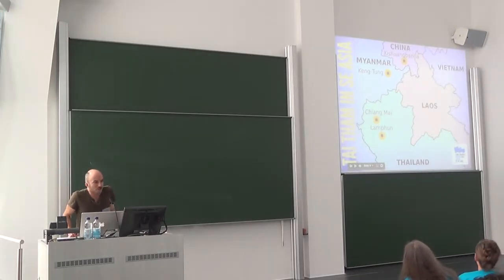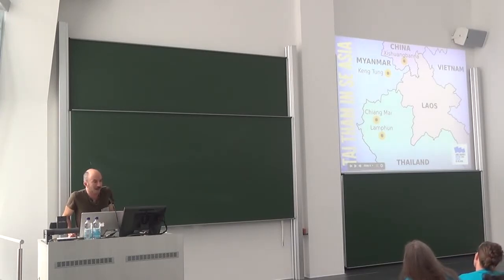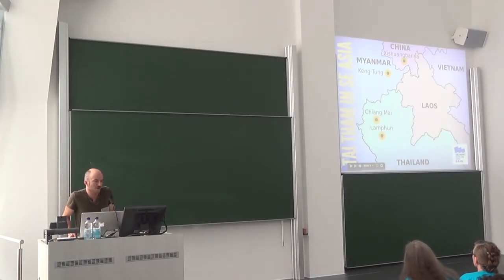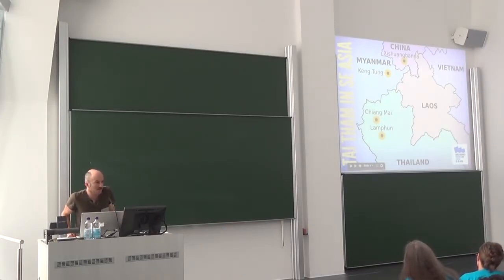For centuries throughout the northern regions of Southeast Asia — in the Xishuangbanna region of Yunnan in China, in the Shan state of Myanmar around the city of Kengtung, in parts of Laos, and in the Lanna region of Northern Thailand around the cities of Chiang Mai and Lamphun — the Taitam script has been used extensively to preserve important cultural and religious texts. And today, Taitam remains the only script used by the Tai Khun people of the Shan state in Myanmar.